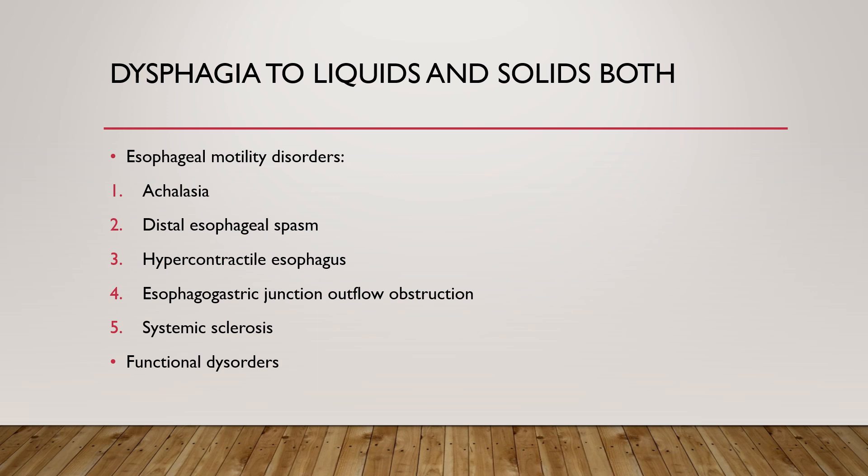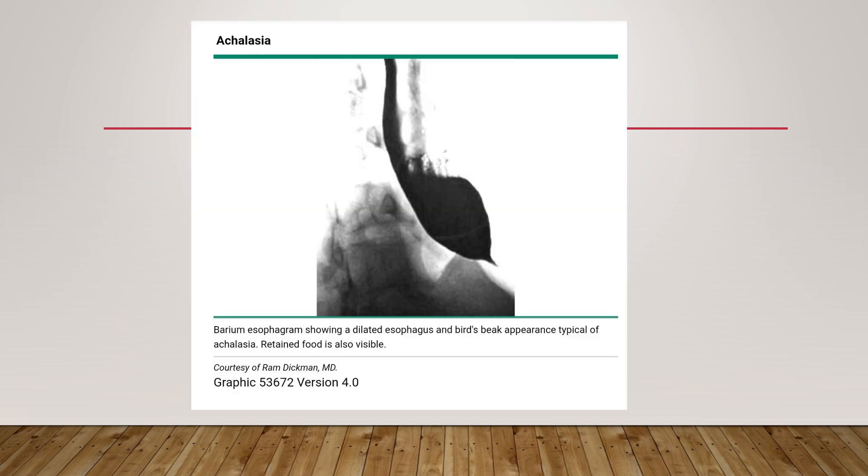The diagnosis of systemic sclerosis is suggested by skin thickening and hardening plus the presence of extra-cutaneous features and serum autoantibodies. Functional disorders will be discussed in the coming slides.